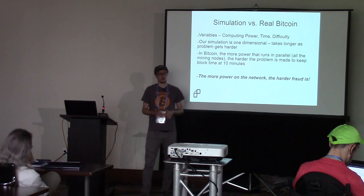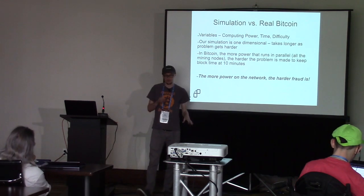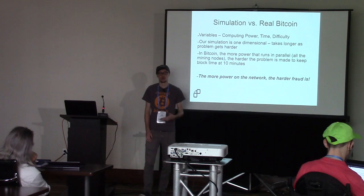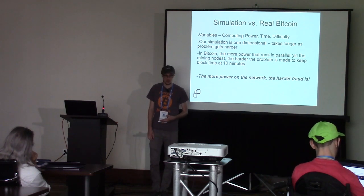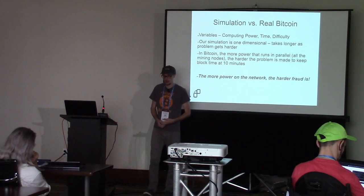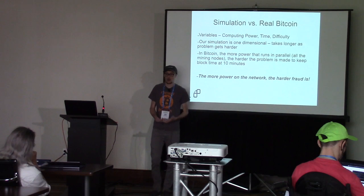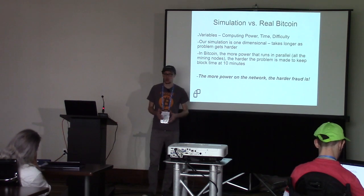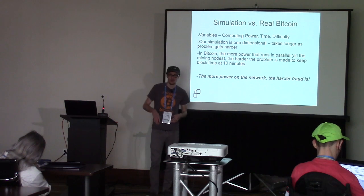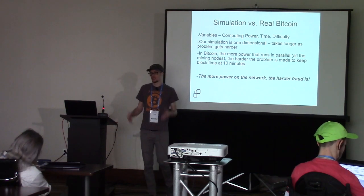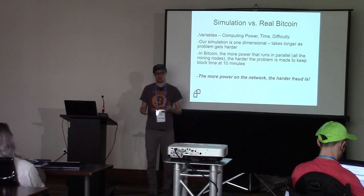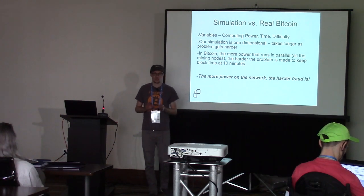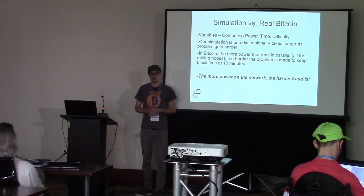The more computing power on the network, the harder it is to pull off fraud, and the more secure the Bitcoin network gets. This applies to any cryptocurrency using proof-of-work mining. Bitcoin and Bitcoin Cash are the largest in terms of hash rate, making a chain reorganization immensely difficult. Ethereum and Litecoin, roughly a magnitude lower, are still astronomically difficult to attack. They all use slightly different hashing algorithms as well.